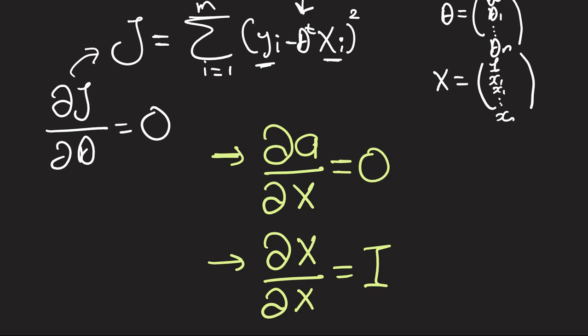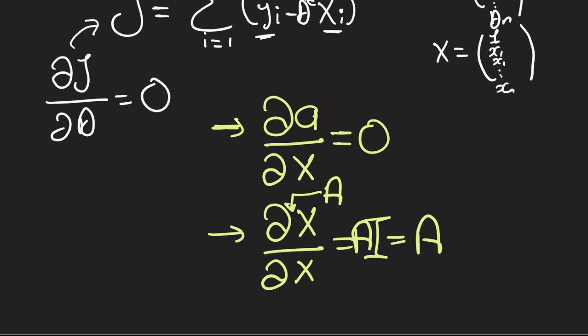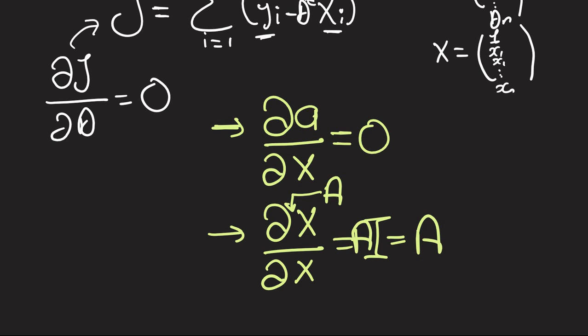And this means also if you have your vector x multiplied by a constant matrix A, then you instead get I but multiplied by A, so you get A. Okay, so this is all we need plus one identity from the differentiation of scalars with respect to vectors video.